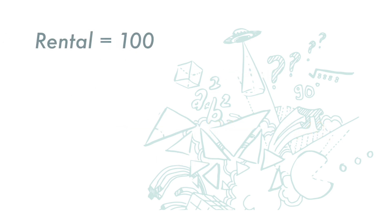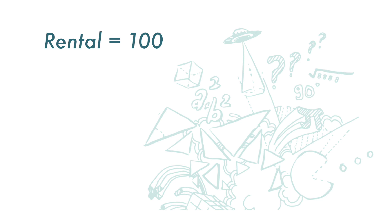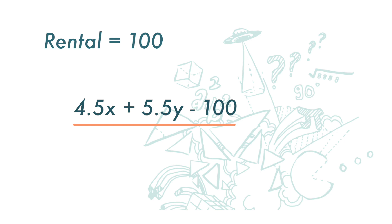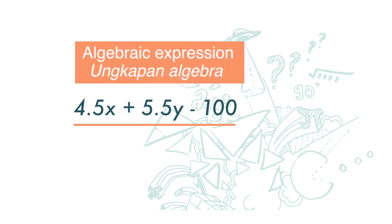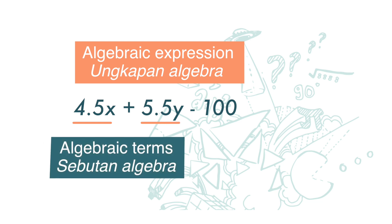If your rental is 100 ringgit per day and you have no workers, then the total income that goes into your pocket, written as an algebraic expression, would be 4.5x plus 5.5y minus 100. Now this expression 4.5x plus 5.5y minus 100 is called an algebraic expression, and 4.5x and 5.5y are called algebraic terms.